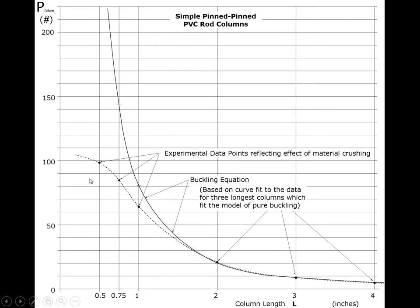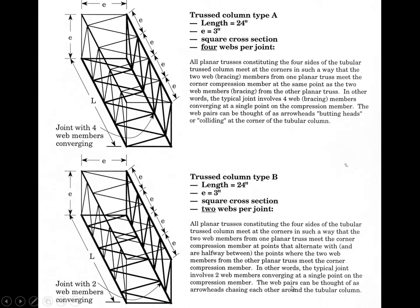Even at half an inch long and an eighth of an inch in diameter — a length about four times its diameter — we're still not totally leveled out, which by all reasonable definitions is a really fat column. We then laced these together into truss columns with various kinds of bracing. The geometric constraint was that if the cross section was dimension E by E, then the spacing of joints along the vertical members would also be E.